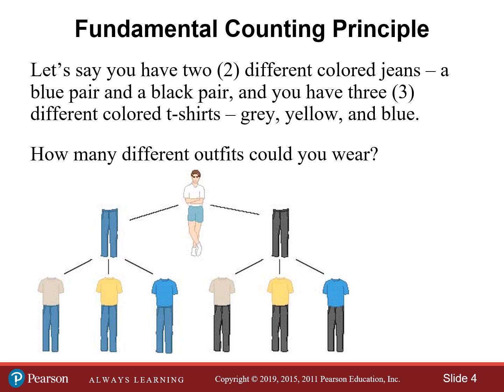Let's say you have two different colored jeans — a blue pair and a black pair — and you have three different colored t-shirts: a gray, yellow, and a blue t-shirt. How many different outfits could you wear? If you look at the picture to the left, you can wear the blue jeans with the gray, yellow, or blue t-shirt — that's three ways. Or if you choose the black jeans, you can wear it with the gray, yellow, or blue t-shirt — three more ways — giving you a total of six different outfits.